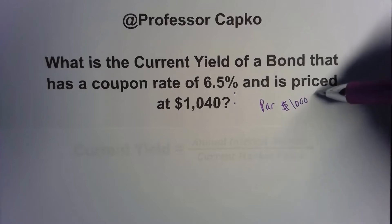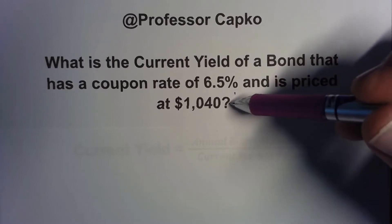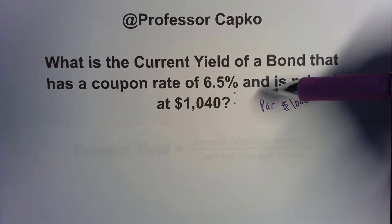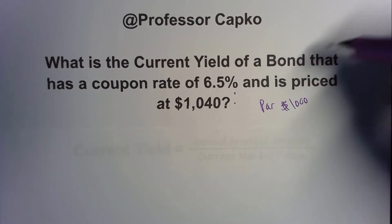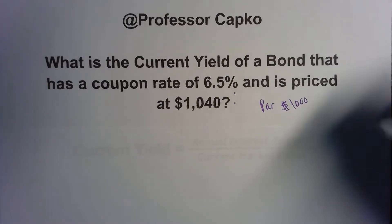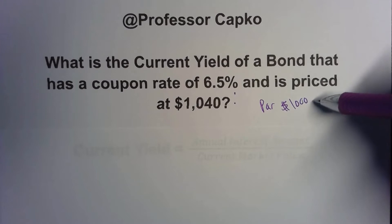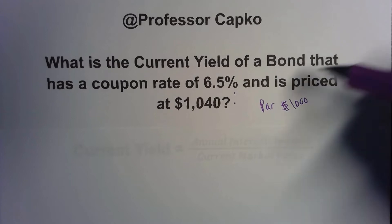That's a reasonable assumption. Usually it's a round number like 100, 1,000, 10,000, something along those lines. Since this is trading at $1,040, a reasonable assumption would be that the par value or face value is $1,000. In other words, this bond, when it matures, will pay you $1,000 cash back.